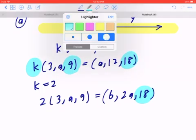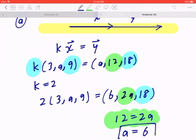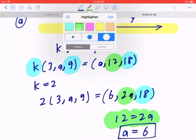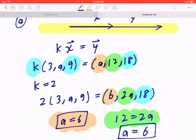So if you look at the middle component, 12 equals 2a. The opposite of multiplying by 2 is to divide by 2, so a is going to be 6. To confirm that, you can always go back to the first component, a equals 6. And this is in agreement with what we did in the second component. So that's the answer for part A.